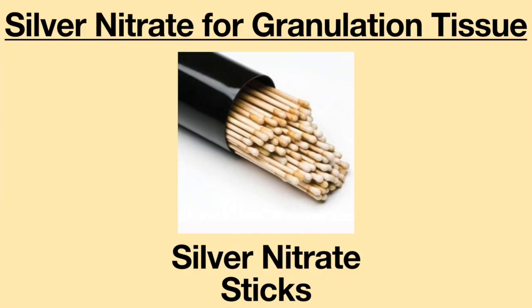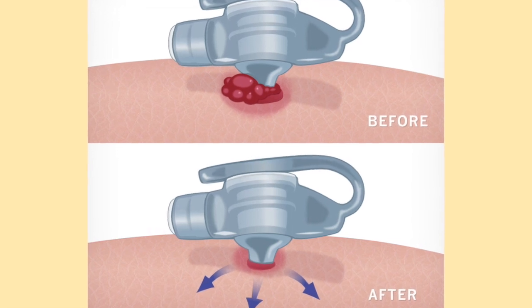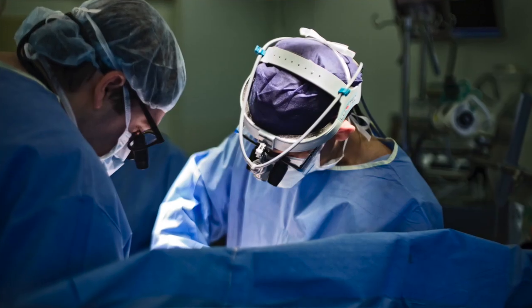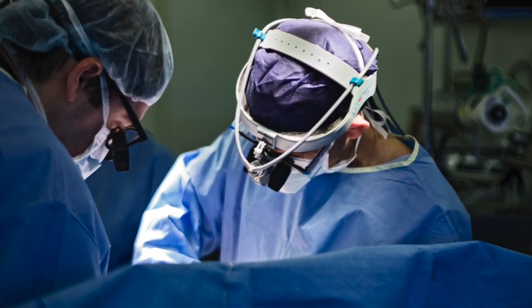Doctors often treat hypergranulation with topical applications which weaken the granulation tissue so that it will stop growing. This encourages the body to move on to the next stage in healing. One of the most common treatments is silver nitrate. Silver nitrate is applied to the hypergranulated tissue, causing the granulation tissue to die. The tissue will turn gray and can be wiped off. Sometimes more aggressive tactics such as surgery to remove the excess tissue may be necessary. A doctor can evaluate a given case and determine the most appropriate course for treatment.